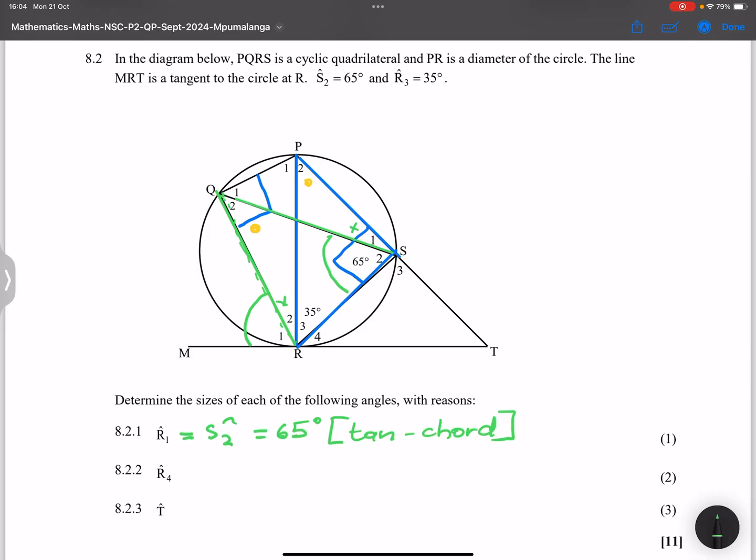And then they said we must look for R4. Now, I'm going to actually take R4. Think about it. I want you guys to remember PR is a diameter, and MRT is a tangent. What does that mean? It means that's equal to 90 degrees. So in this case, that's the tangent perpendicular to the radius.